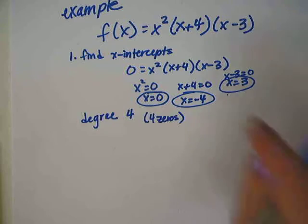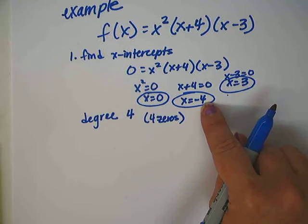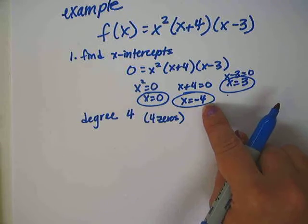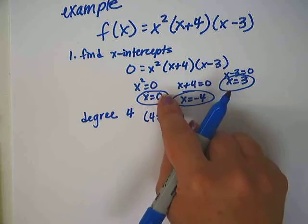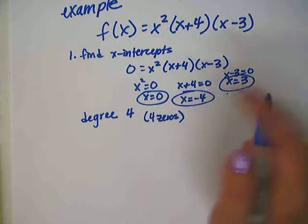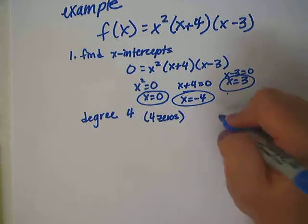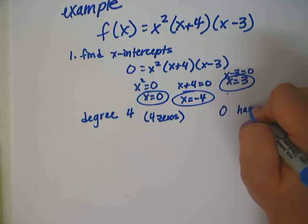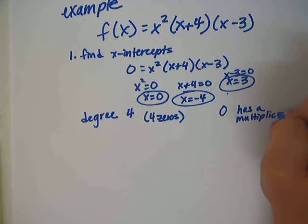That means there should be 4 zeros. Sometimes zeros can be imaginary — that's one reason why you might not have 4 zeros, and we won't talk about that until section 5.6. In this case, one of our zeros has multiplicity — the zero at 0 has a multiplicity of 2, so that accounts for the fourth zero.